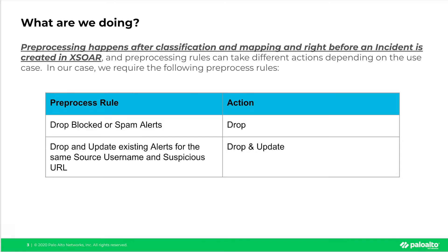Pre-processing in XOR happens right after the classification and mapping phase and right before an incident is actually created in XOR. Our pre-processing rules can take different actions depending on our use case. Our SOC has told us they wish to drop any alerts for which the URL was already blocked or the URL category was spam, so we'll be creating a pre-processing rule to do that. Next, we want to drop and update any existing alerts with the same username and suspicious URL for which we already have an incident.